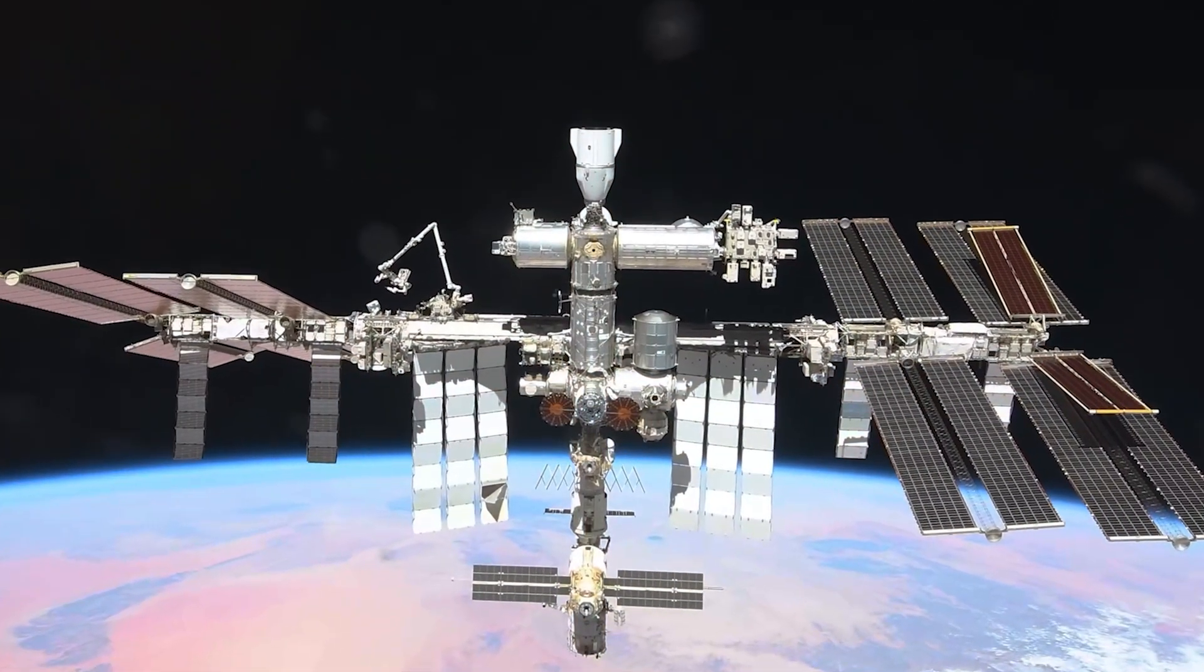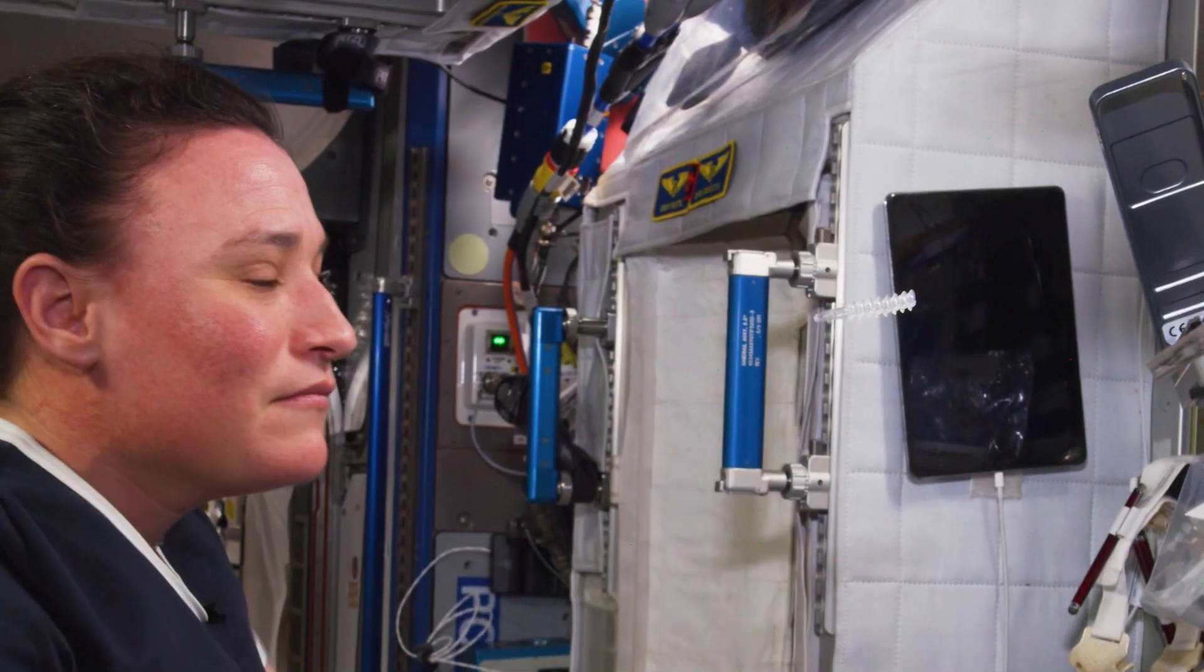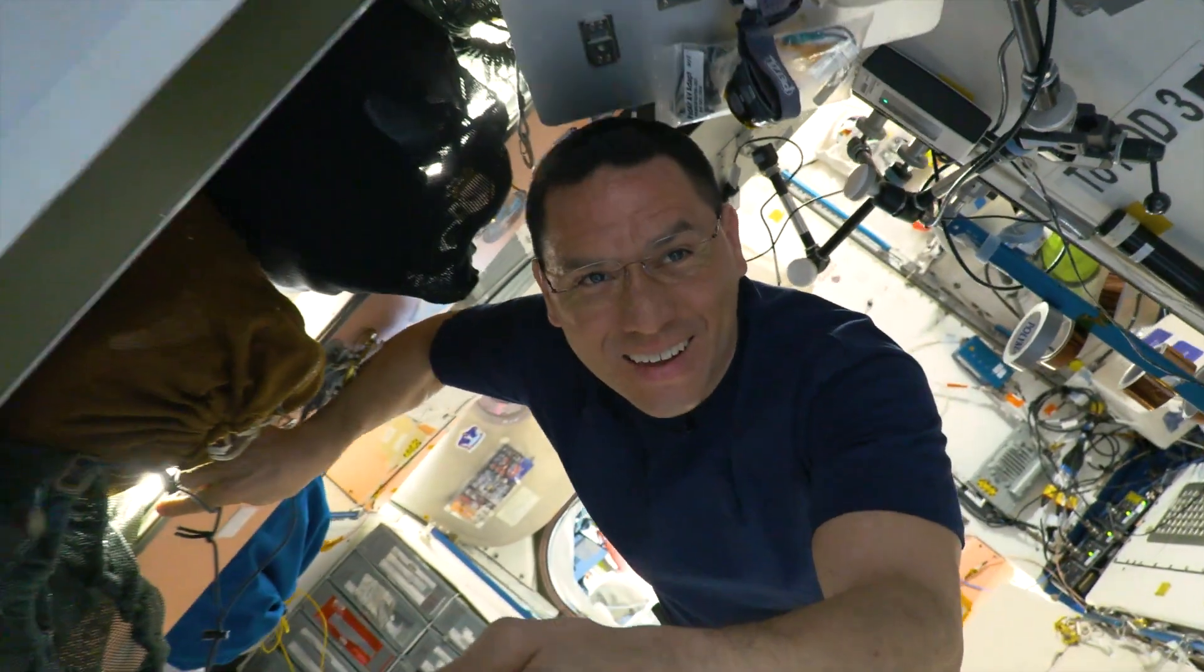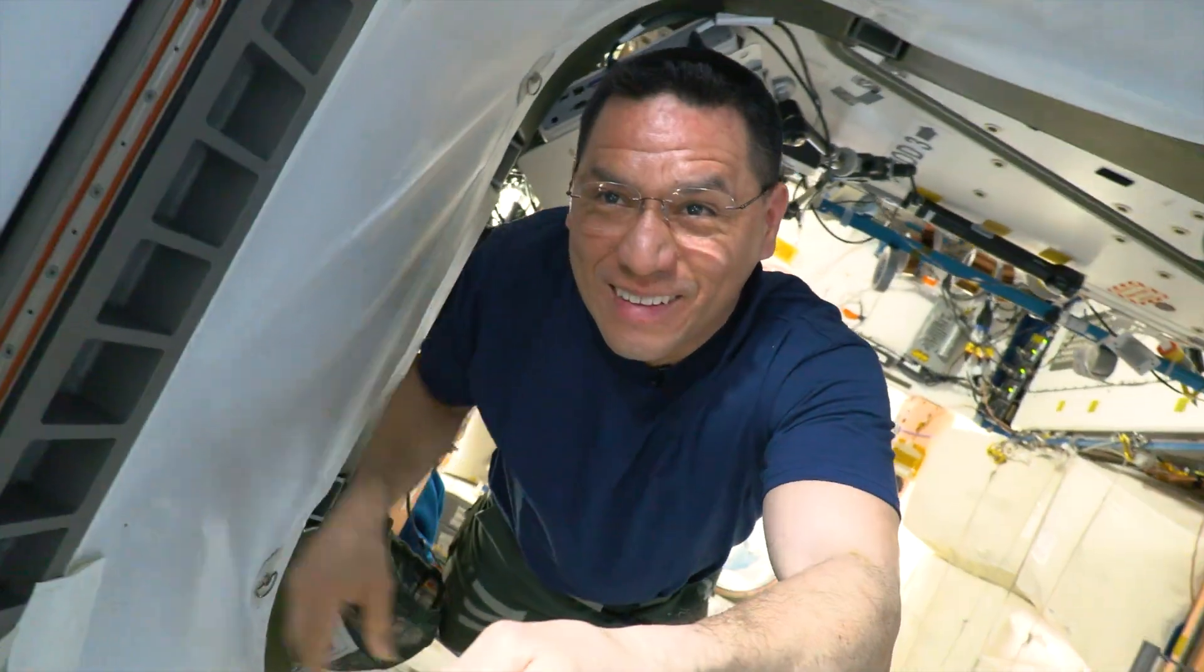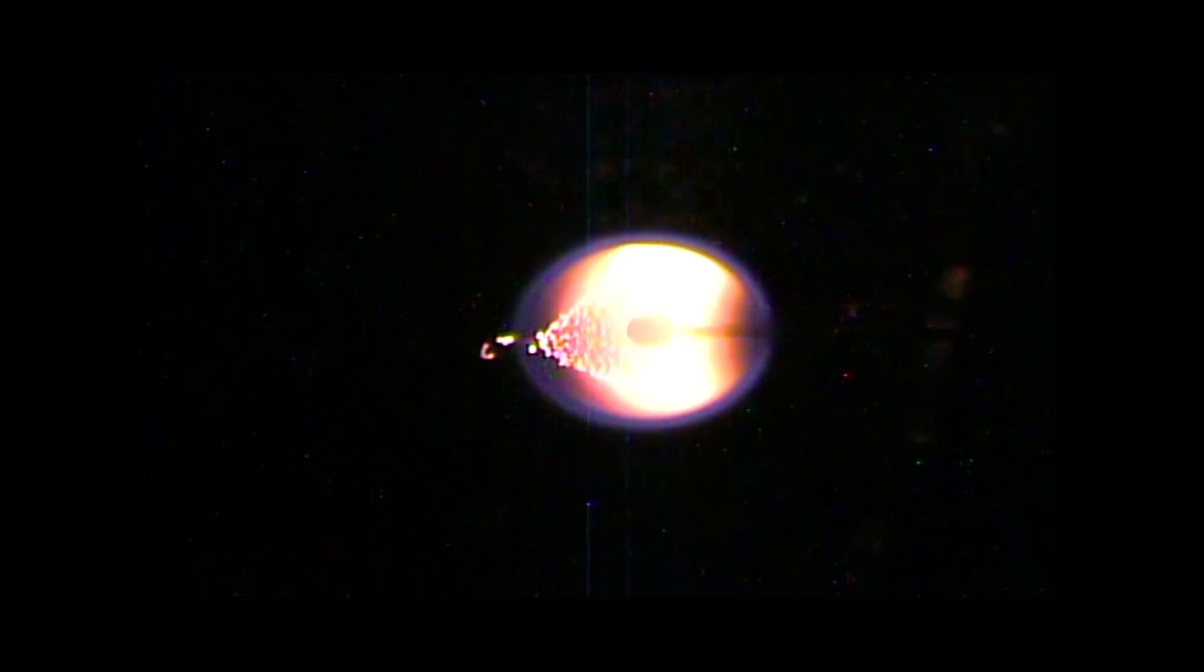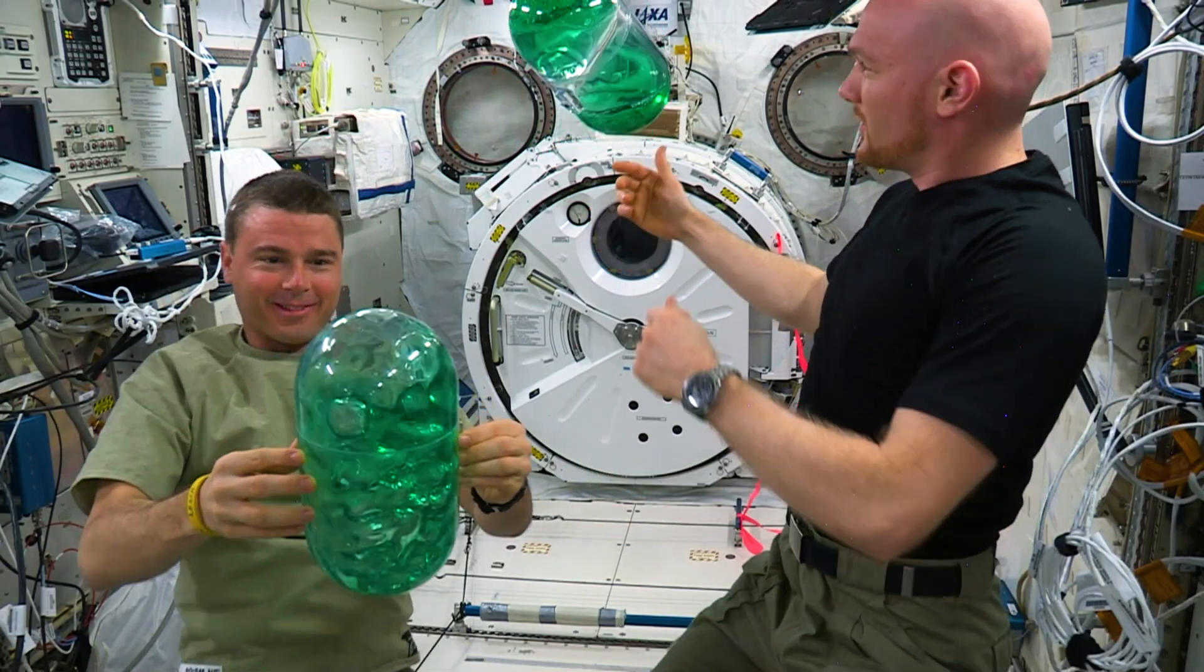We conduct science on the International Space Station because it is an environment where human beings are not innately meant to be. And because of that, you can learn things about human physiology. You can learn things about physics and chemistry that are impossible to learn on Earth.